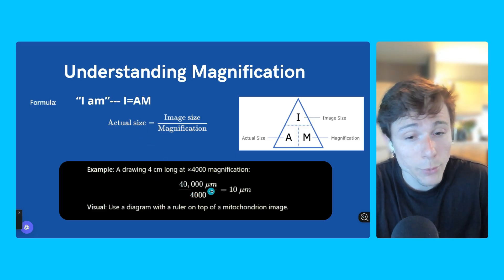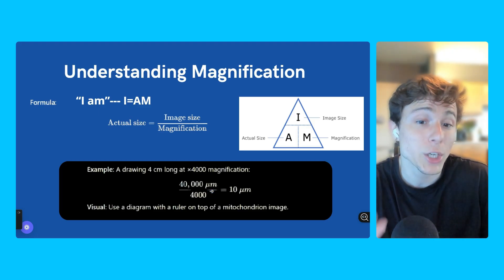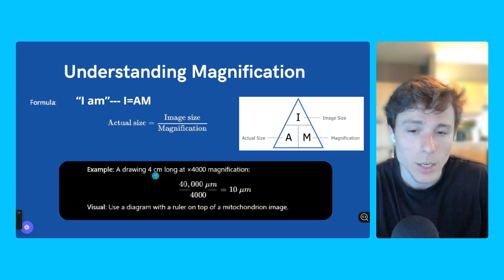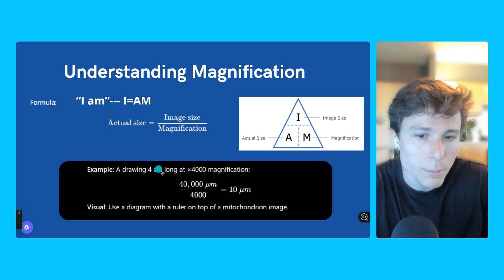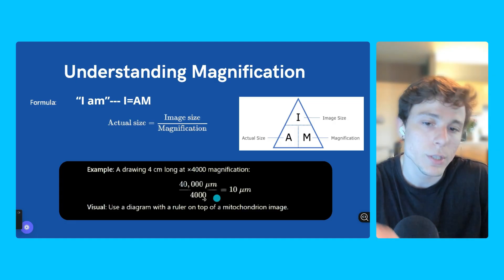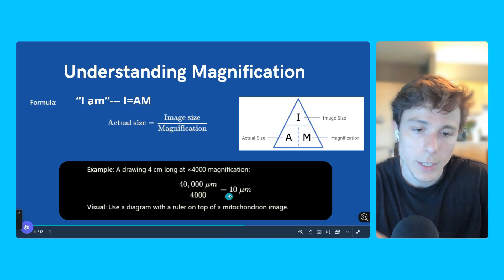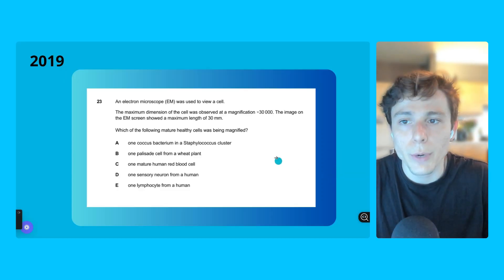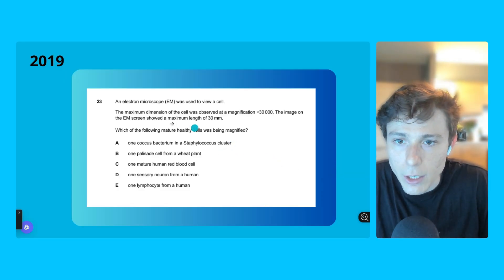Let's just go to our formula, I=AM. We have to remember that the unit that we're going to use is going to be the micrometer. In order to reach that, you have to remember that 4 centimeters is 40 millimeters, and if you want to transform from millimeters to micrometers, you have to multiply by 1,000. So that will be 40,000 micrometers divided by 4,000. That leads us to an actual size of 10 micrometers.